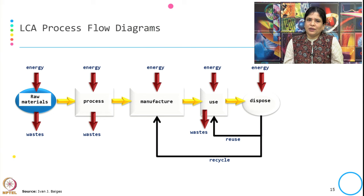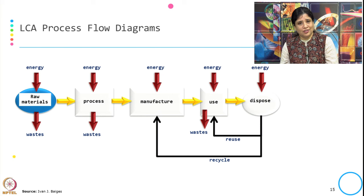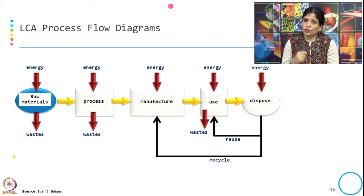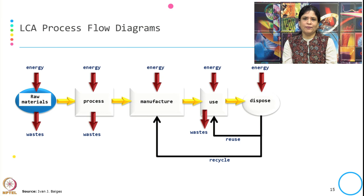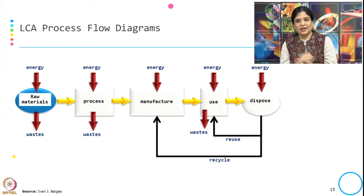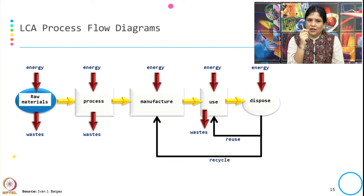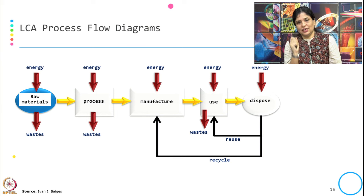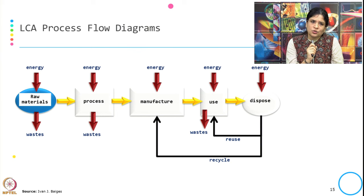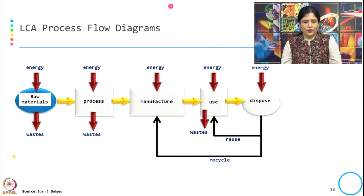Returning to the initial question about choosing a source of energy — the LCA process flow diagram shows how the process flow changes for different kinds of energy. The basic process flow diagram is: getting the raw material, processing it, manufacturing it, using it, and disposing it. The inputs in each case are energy and other materials, and the output is whatever waste is generated from each flow.